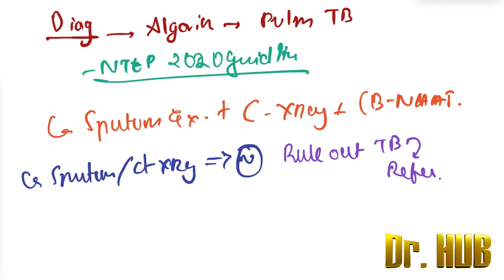Next, if the sputum is positive and CB-NAT is also positive, this is a microbiologically confirmed case of TB.